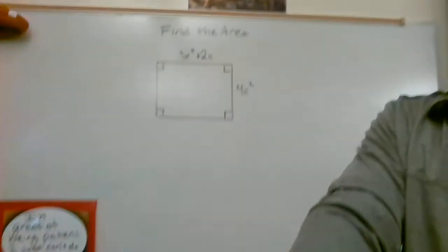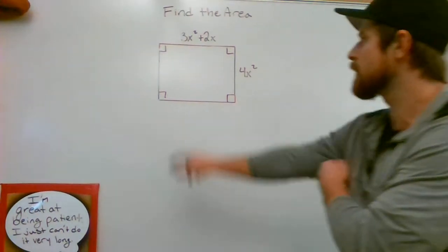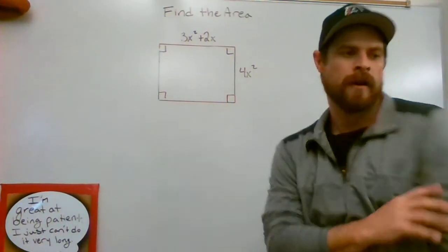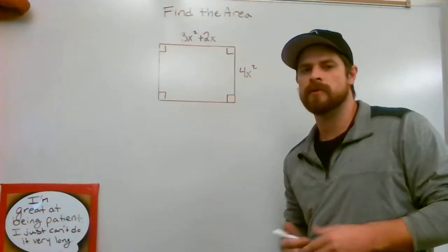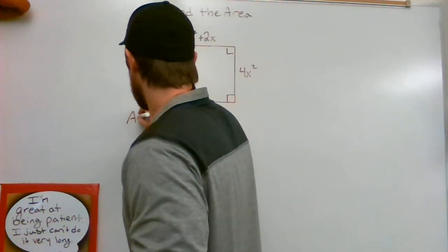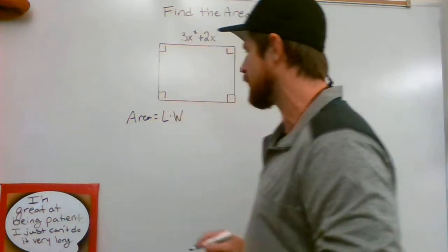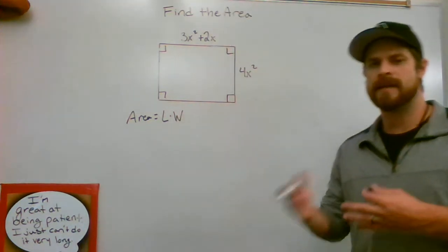Let's talk about how we would do it. Find the area of a given rectangle with polynomials. So the first thing that we need to do is we need to ask ourselves, how do we find the area of a rectangle? And we all know that the area of a rectangle is the length times the width. So if we can take our length times our width, then we're able to find the area.